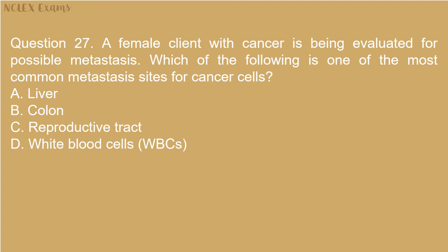Question 27: A female client with cancer is being evaluated for possible metastasis. Which of the following is one of the most common metastasis sites for cancer cells? A) Liver. B) Colon. C) Reproductive tract. D) White blood cells (WBCs).